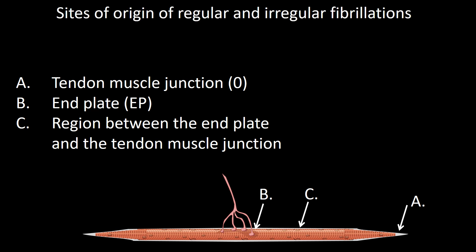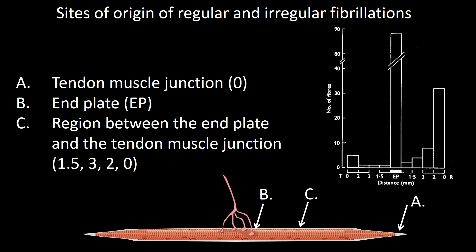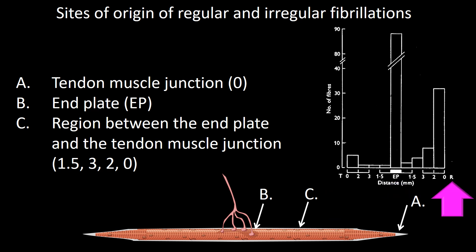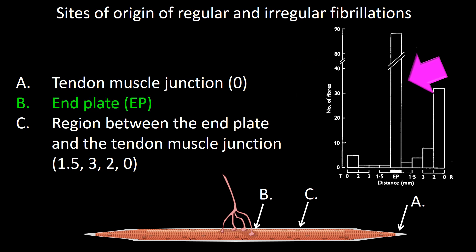I have done so to indicate the site of origin of regular and irregular fibrillation. I have added numbers under the C option and a diagram. The numbers indicate distance from the end plate of a small diaphragmatic muscle fiber of about 10 millimeters in length. EP stands for end plate, T for tendon, R for rib insertion of the diaphragmatic muscle. The number scale corresponds to number of fibers. As you can see, the most frequent site of origin of regular and irregular fibrillation is the end plate.